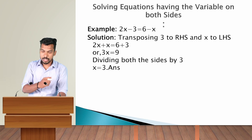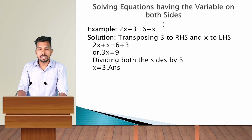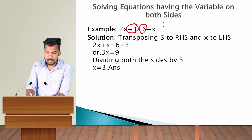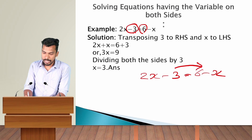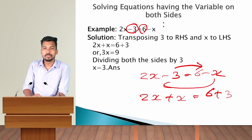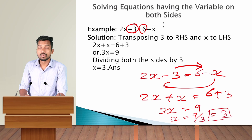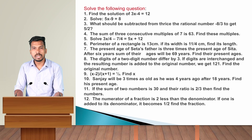Let's solve another example: 2x minus 3 equals 6 minus x. Set constant terms on the right hand side. So minus 3 moves to the right and minus x moves to the left: 2x plus x equals 6 plus 3. Therefore 3x equals 9, and x equals 9 divided by 3, which gives x equals 3. In the same format you can solve similar questions.